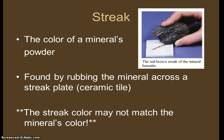The next test is called a streak test, and the streak is the color of the mineral's powder. When you rub it across a piece of porcelain it'll write on it — kind of like using chalk to write on a chalkboard, basically powdering the chalk across the board. The streak is the color of that powdered mineral. This is interesting because the streak color may not match the mineral's color. Some minerals have a brown streak but are light colored, or a greenish mineral may have a white streak. So it really helps narrow down which mineral you've got.